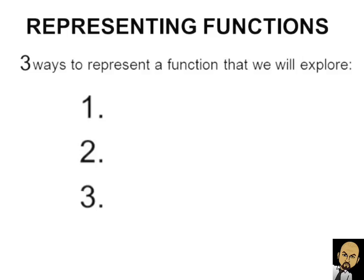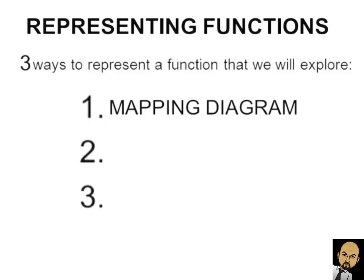We're going to take a look at three ways to represent a function. The first way is called the mapping diagram — that's new, we've never done that before. The next way is using a table of values, with x and y, which we've been doing for a while, including graphing and finding slope. The third way is through a graph. So let's take a look at the mapping diagrams.